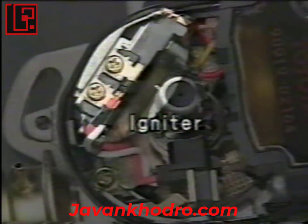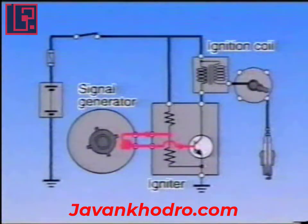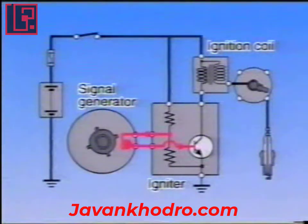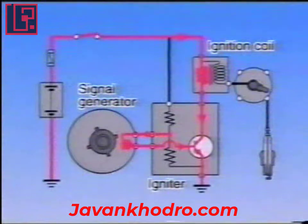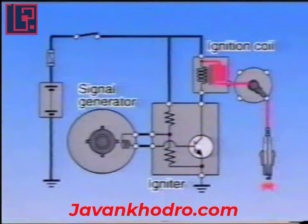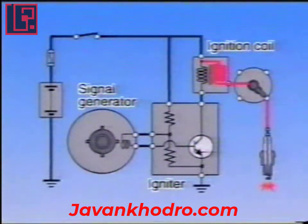Let's take a look at how the current is turned on and off. When the engine is running and one of the signal rotor's teeth approaches the pickup coil, the voltage is generated in the direction shown in the diagram. The base current flows in the transistor, the transistor switches to on, and the primary current flows in the coil. When the signal rotor's tooth is aligned with the pickup coil, the voltage generated in the pickup coil decreases, and the transistor is turned off. This cuts off the primary current and generates a high voltage in the secondary coil.